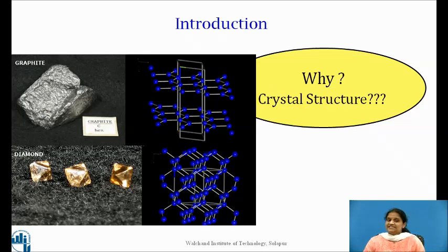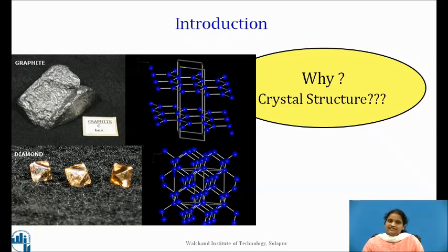A great example of the importance of crystal structure is the difference between two minerals: graphite and diamond. Graphite is a soft, dark-colored material that is found in pencil lead, while diamonds are very hard, often transparent, colorless, and very expensive gemstones. Both graphite and diamond are made up of only one element — carbon. The reason they are so different from each other is because the carbon atoms are stacked together into two different crystal structures.